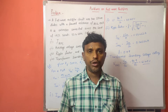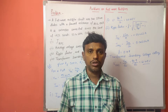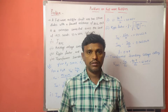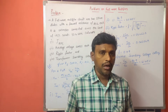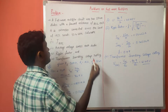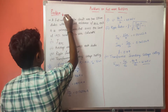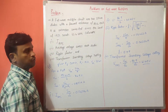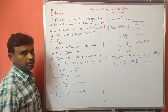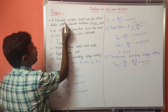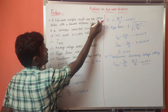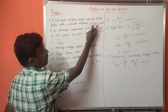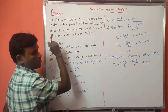Hello everyone, today I am going to explain about the problems on full wave rectifier. Here I am taking the first problem, considering the center tap transformer full wave rectifier. A full wave rectifier circuit uses two silicon diodes with the forward resistance of 20 ohms each.